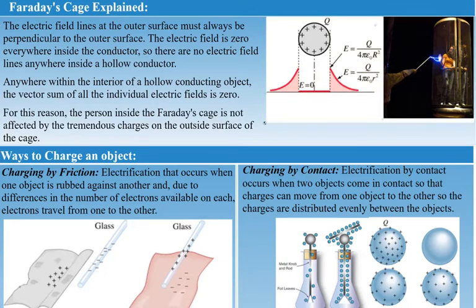Faraday's cage is used to prevent stray electrical fields in the environment from interfering with sensitive measurements, like electrical signals and devices like cell phones. During electrical storms, if you're driving a car, it's best to stay inside because the car acts as a metal cage. It's not the tires that protect you — it's the metal cage, because the charge inside the cage is zero.